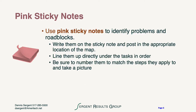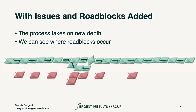Our next step is to take pink sticky notes and give a set to each of the subject matter experts to identify problems and roadblocks. We ask them to write whatever the issue or roadblock is on the sticky note and post it underneath the appropriate location on the map. We ask them to line them up directly under the tasks in order and number them with a number that matches the steps they apply to. Once we've got this done, we take a picture. With the issues and roadblocks added, the process takes on new depth — we can see where roadblocks occur.